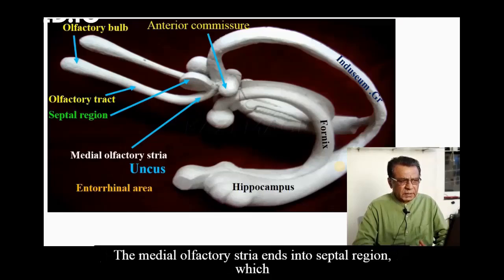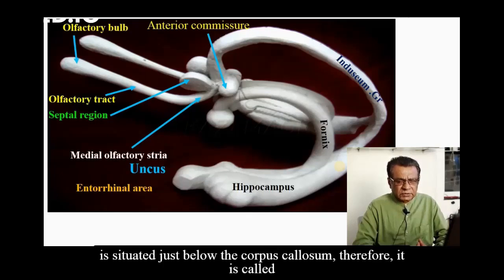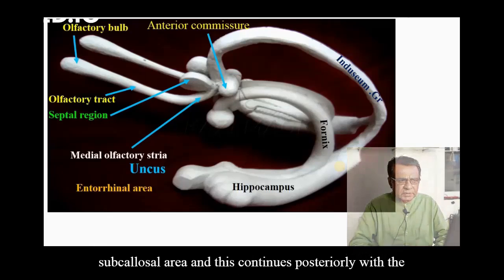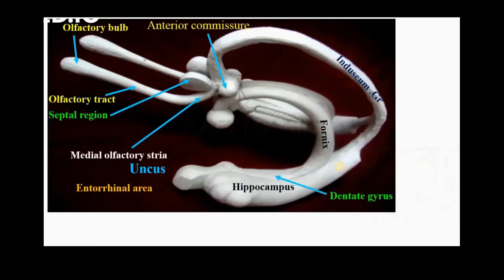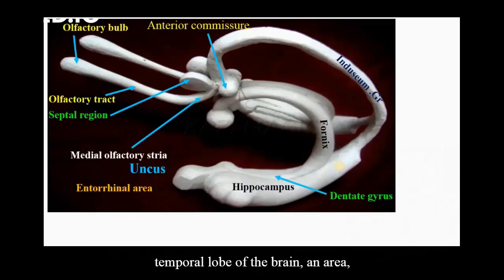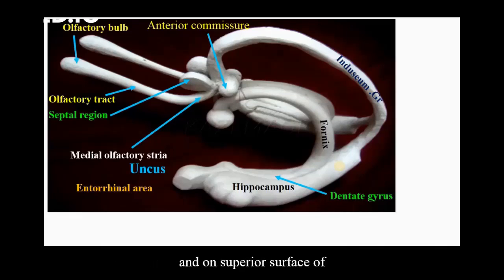The medial olfactory stria ends into the septal region, which is situated just below the corpus callosum. This particular area is called the subcallosal area, and it continues posteriorly with the dentate gyrus. On the inferior surface of the brain and the temporal region, there is an area called the uncus, and on the superior surface you find the dentate gyrus.